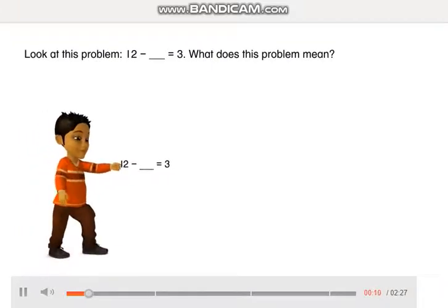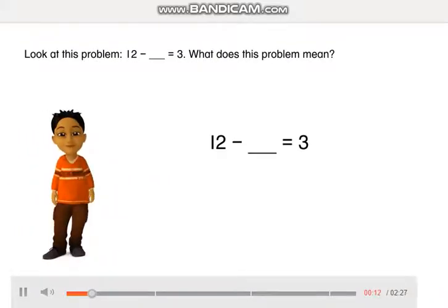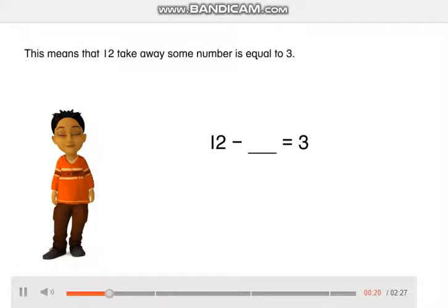Look at this problem. 12 minus blank is equal to 3. What does this problem mean? This means that 12 take away some number is equal to 3.